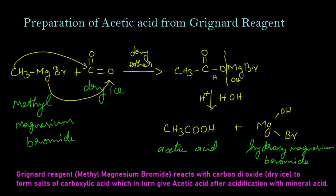This intermediate is a salt of carboxylic acid, which in turn gives acetic acid and hydroxy magnesium bromide by acid hydrolysis.